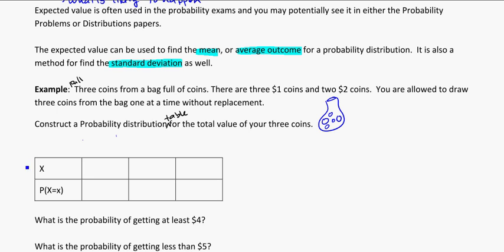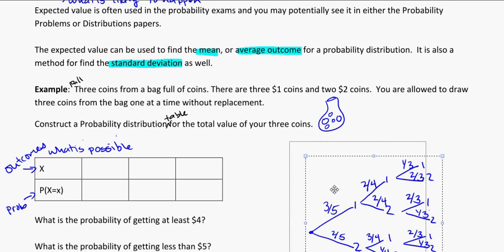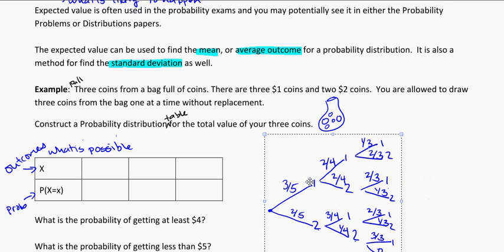So a distribution table, the top row is always the outcomes, and this is what is possible. In this case, how many different values, like how many different possible ways can you draw those three coins, how much money is that in your pocket? And the bottom row is always going to be the probability. So if we were going to do this, one thing that might be helpful is to do a probability tree. And I've kind of done one already, so let's just take a look at that, save the time of trying to write it all out.